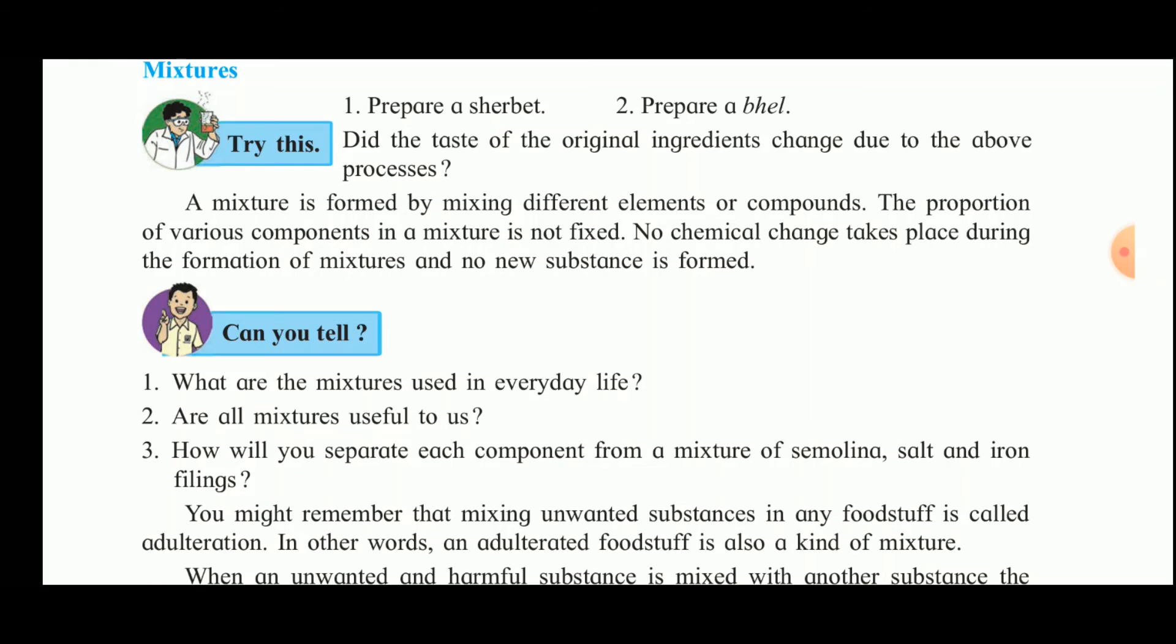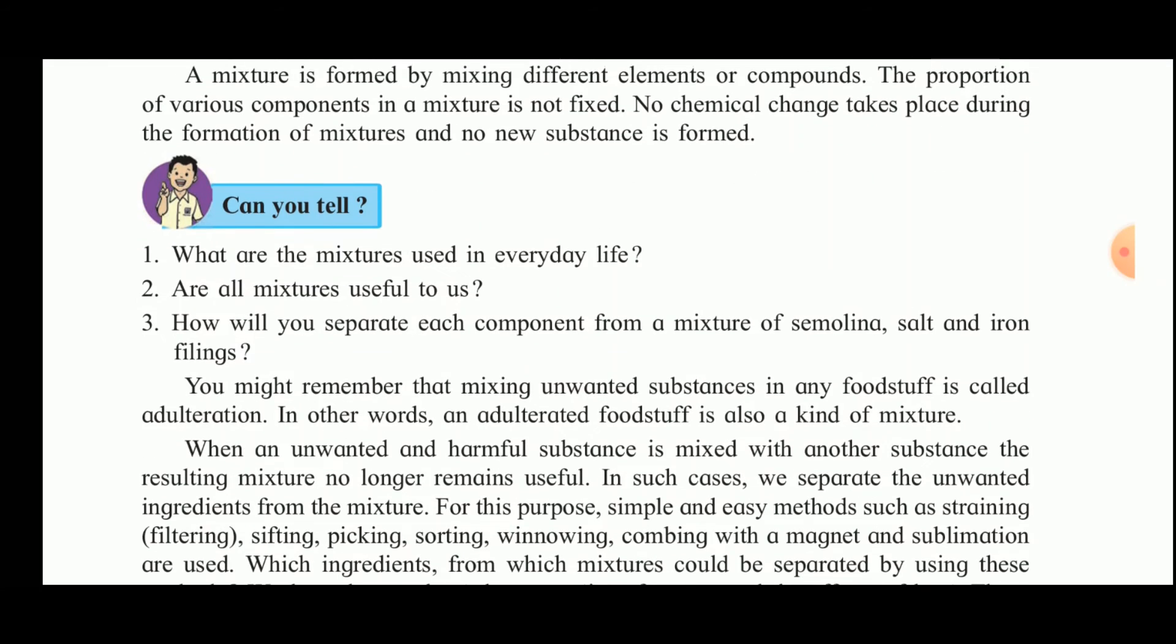How will we separate each component from a mixture of semolina (rava), salt, and iron filings? If you move a magnet through the mixture, all the iron filings will stick to the magnet. Remove them. Add water to the remaining mixture. All salt will dissolve, and then filter through filter paper. Semolina will settle on the filter paper. The filtrate will be salt water, and the salt can be separated by evaporation or distillation.